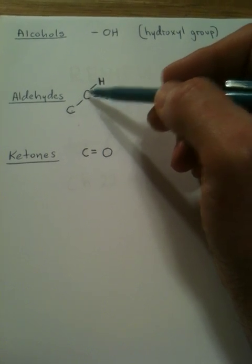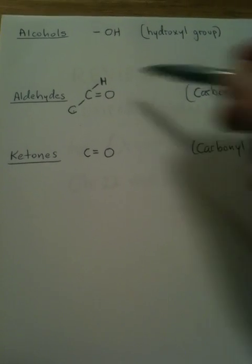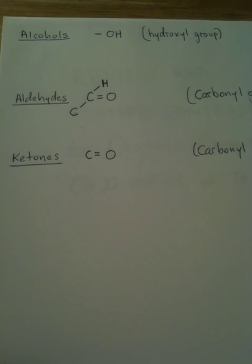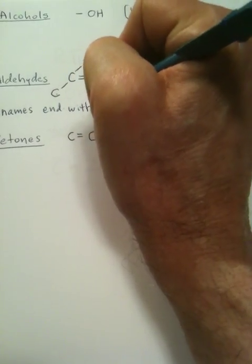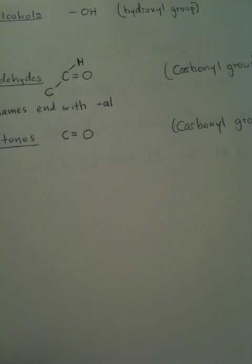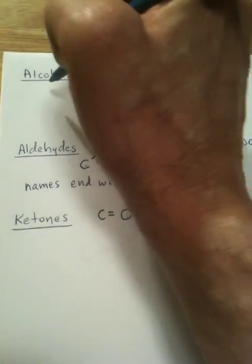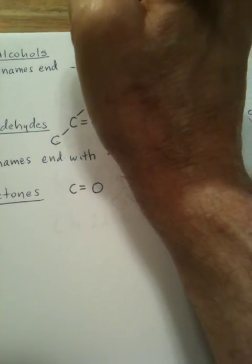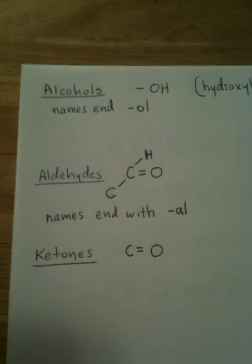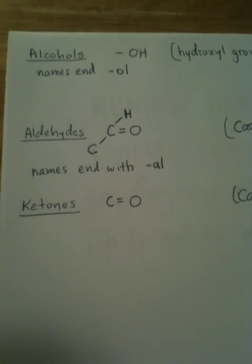When we come to name aldehydes, the carbonyl group is always going to be carbon number one, and all of these will have names that end with an AL ending. Now, alcohols are easily confused because their names always end with OL, not AL. They sound a lot alike and you can get those two mixed up really easily, and a lot of students do, so be careful of that.